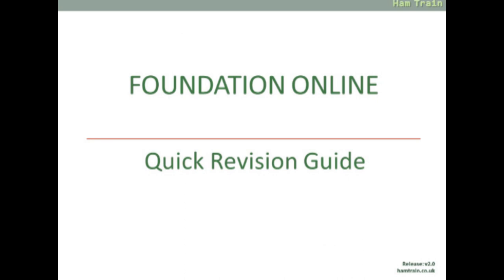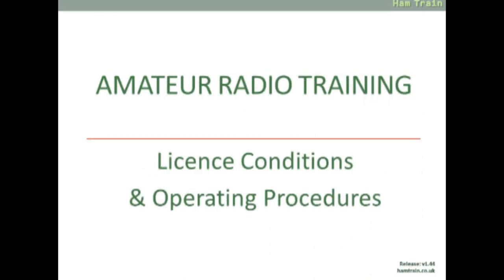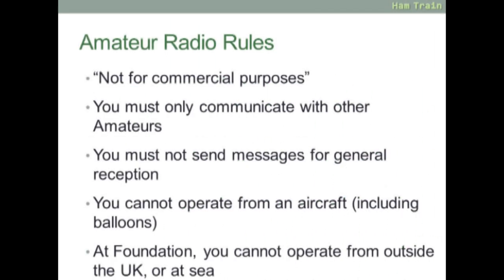Let's get started with license conditions and operating procedures. Amateur radio is not for commercial purposes. You can only communicate with other licensed amateurs. You mustn't broadcast or send messages for general reception. You can't transmit from an aircraft, and at foundation you can't operate from outside the UK or at sea.